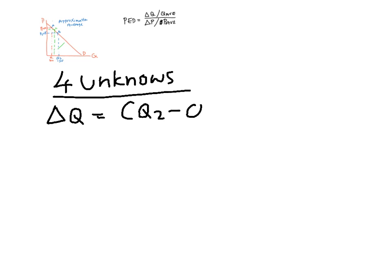So basically there are four unknowns. There are four things we do not know, four things we have to find out. First we have to find out change in Q. Change in Q is simply Q2 minus Q1. You could put Q1 minus Q2, it doesn't matter. The thing about the approximation method is it doesn't matter if you're starting from point A and finishing at point B or starting at point B and finishing from point A. You get exactly the same answer.